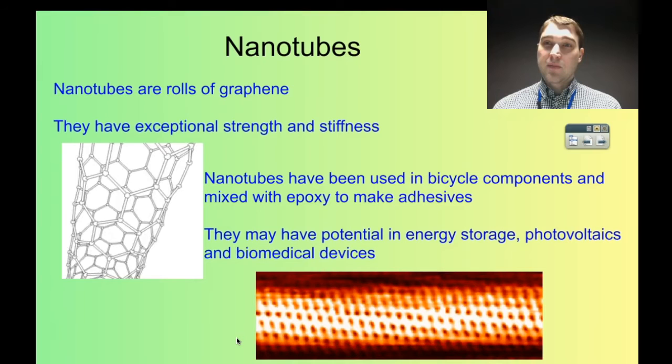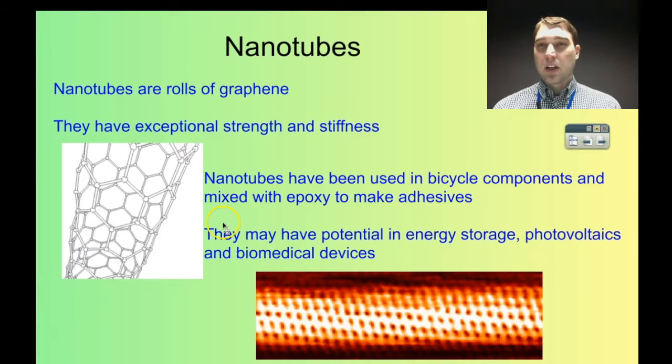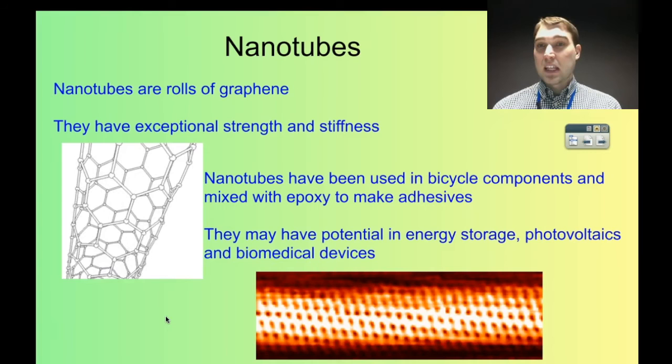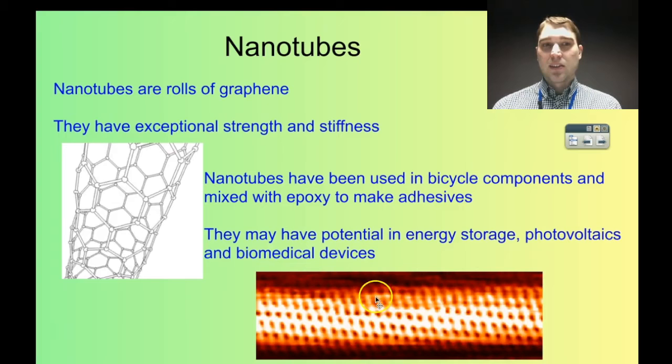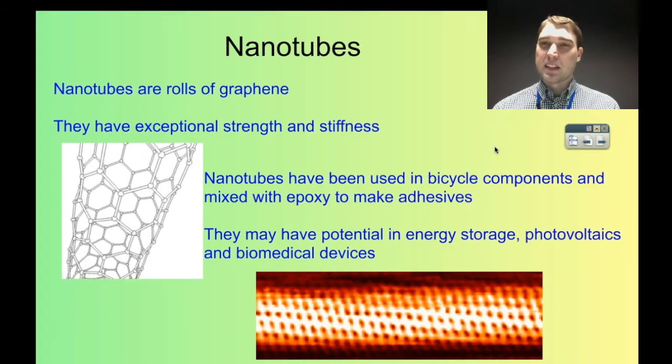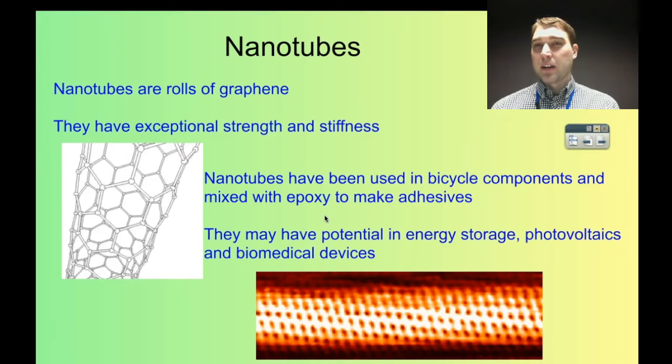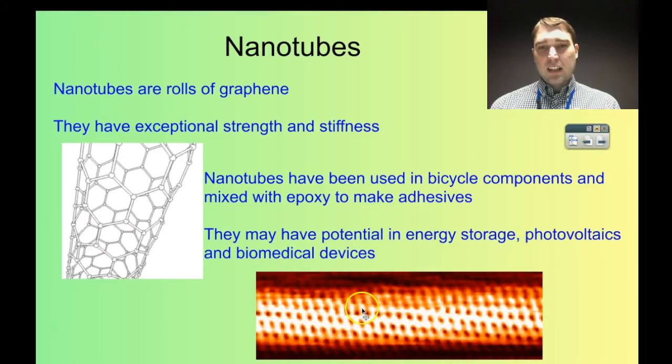Another form of fullerene that's not a ball is called a nanotube. These are rolls of graphene where you're essentially folding the graphene over on itself and making a tube. These are exceptionally strong and stiff. Because of that strength and stiffness, they're currently being used in interesting places — still very early in the science. A bicycle company puts nanotubes into components that need to be particularly strong. There's also a company mixing nanotubes with epoxy, a synthetic adhesive, making it 30% stronger than regular epoxy. Here's a scanning electron micrograph of a nanotube where you can see the tube structure and how it rotates around.